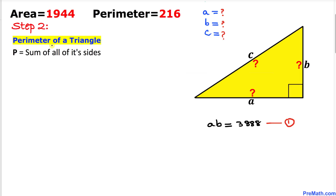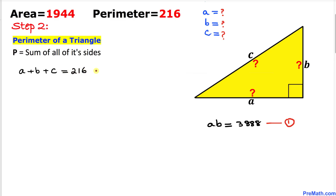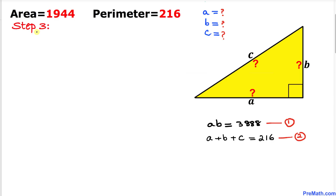Here's our next step. Let's talk about the perimeter of this triangle. We know that the perimeter is equal to the sum of all of its side lengths, and our side lengths are a, b, and c. Our given perimeter is 216, so I can write a plus b plus c equals 216. Let's call this equation number two.